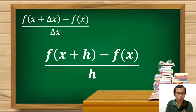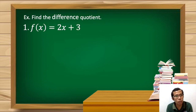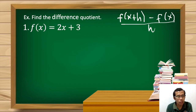So this is the formula that we're going to use. Let's proceed to Example 1: f(x) is equal to 2x plus 3. We'll use the function f(x+h) minus f(x) all over h.